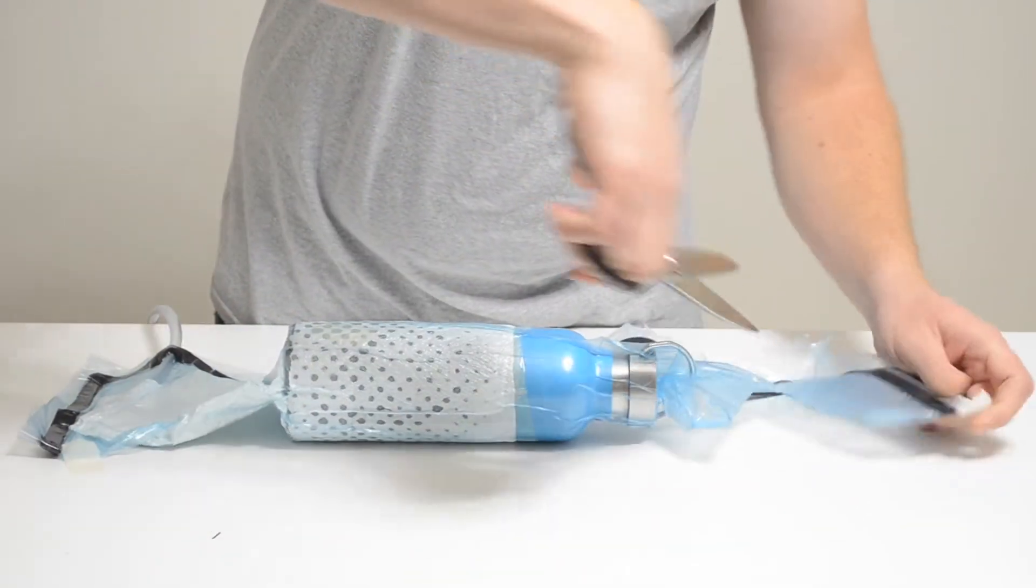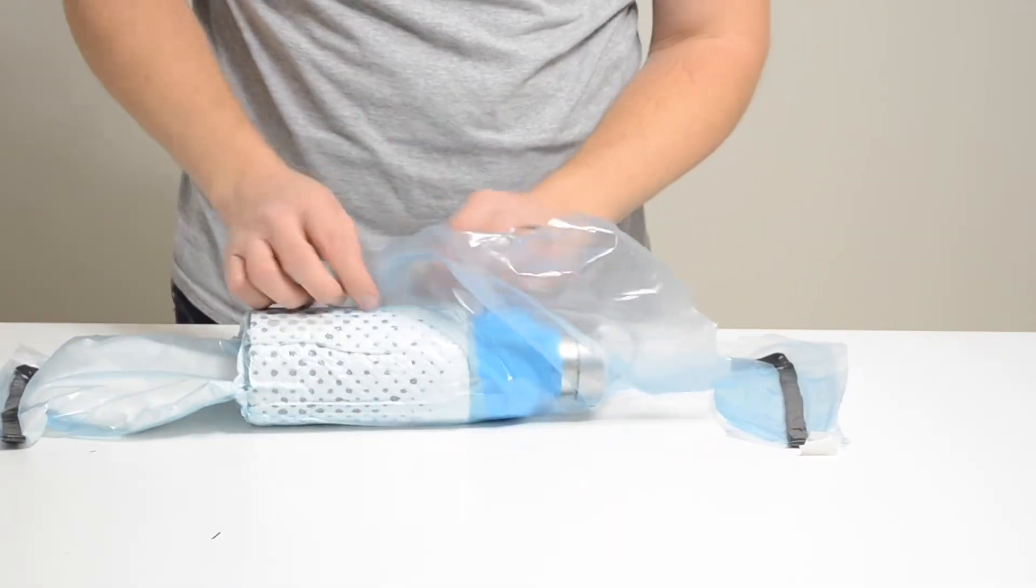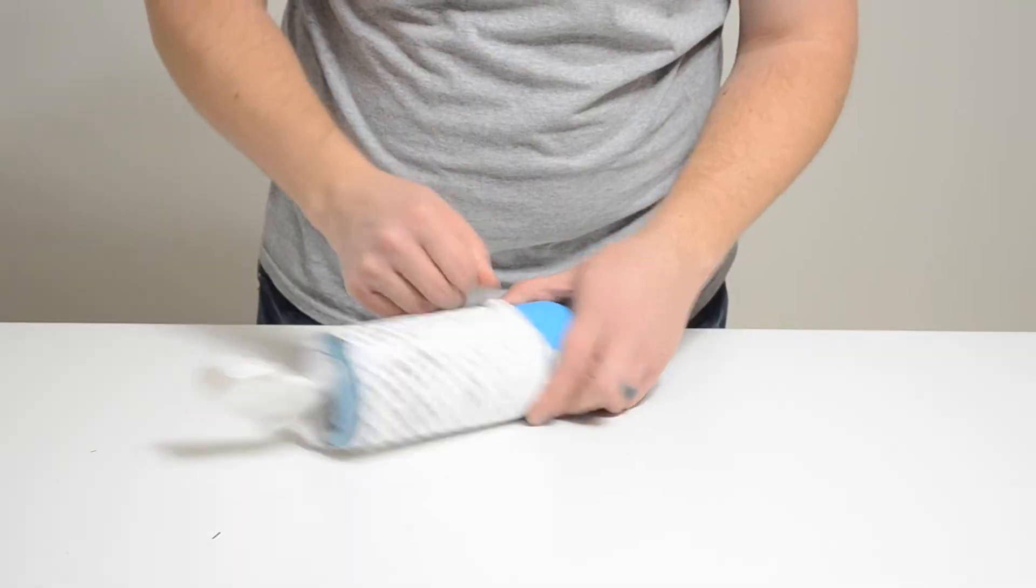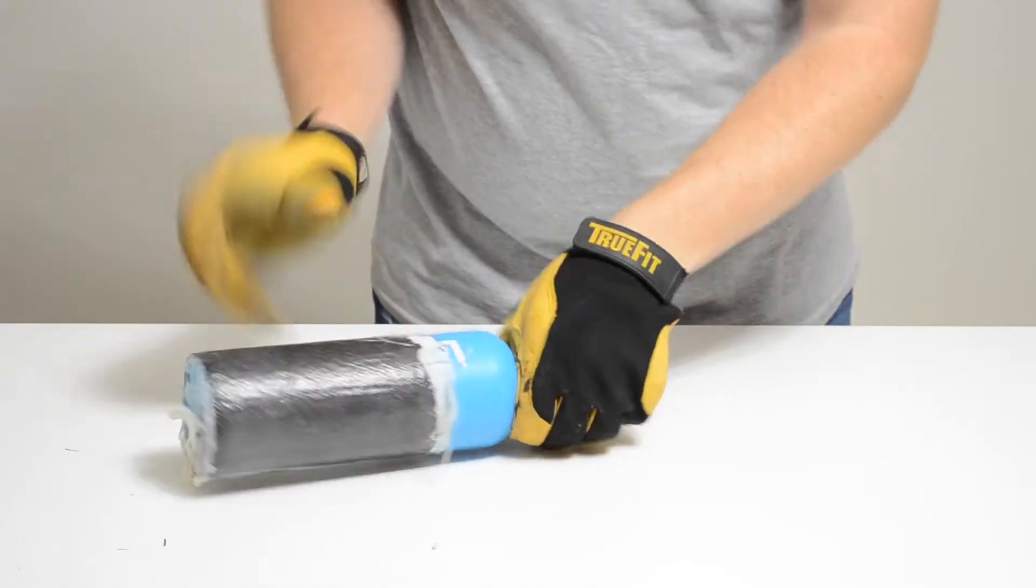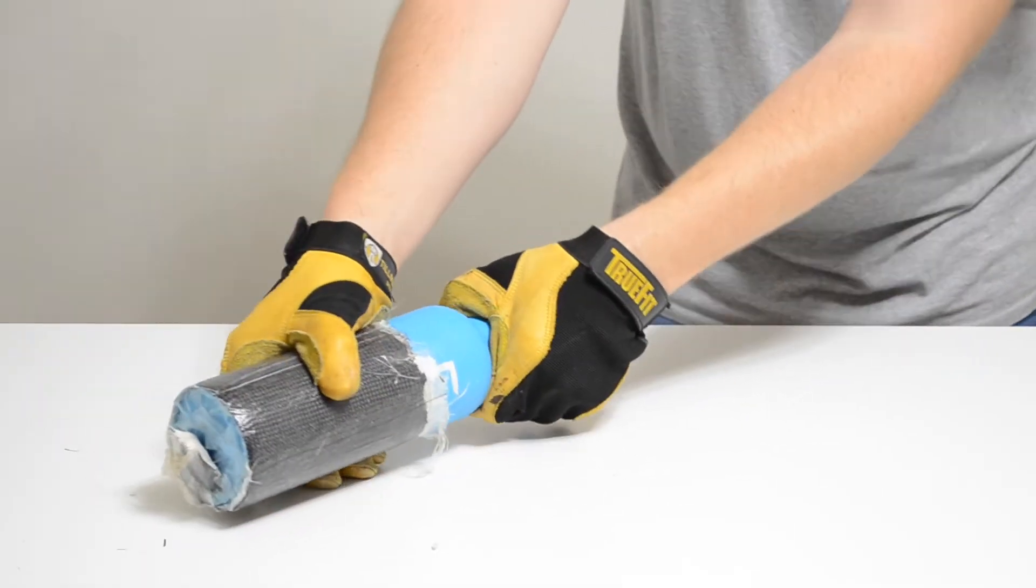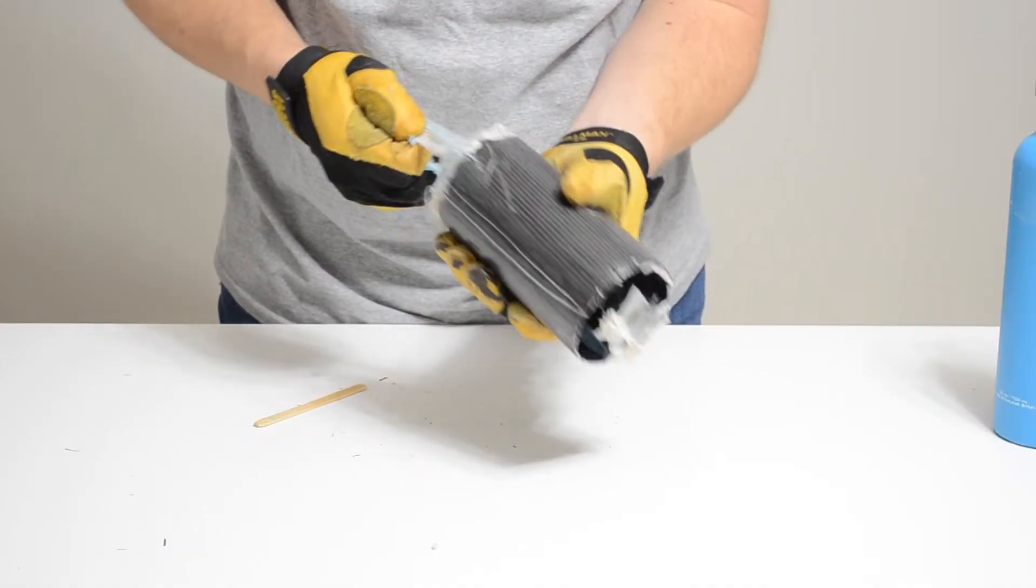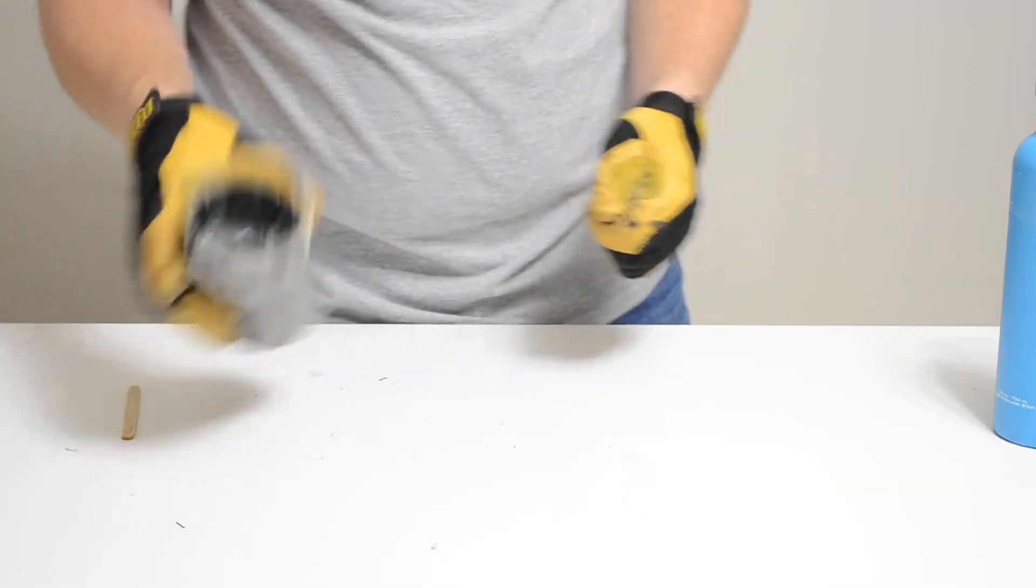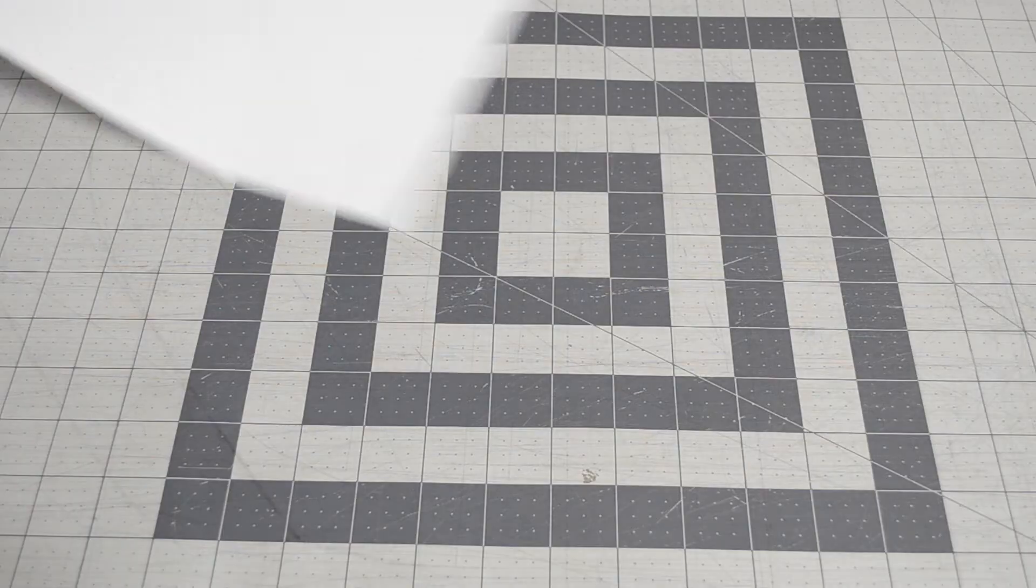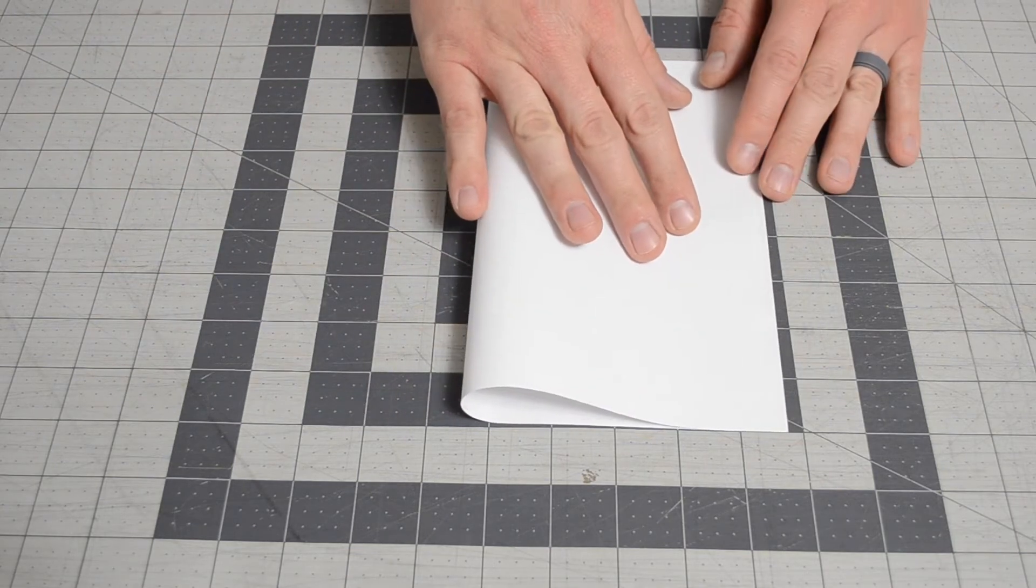Once it's cured you can remove all of the vacuum bagging material, the breather, and the perforated film. Pulling the part off the tool was a lot harder than it shows here, and it probably would have been a lot easier had I not taped my vacuum bagging material to the bottle in the first place.